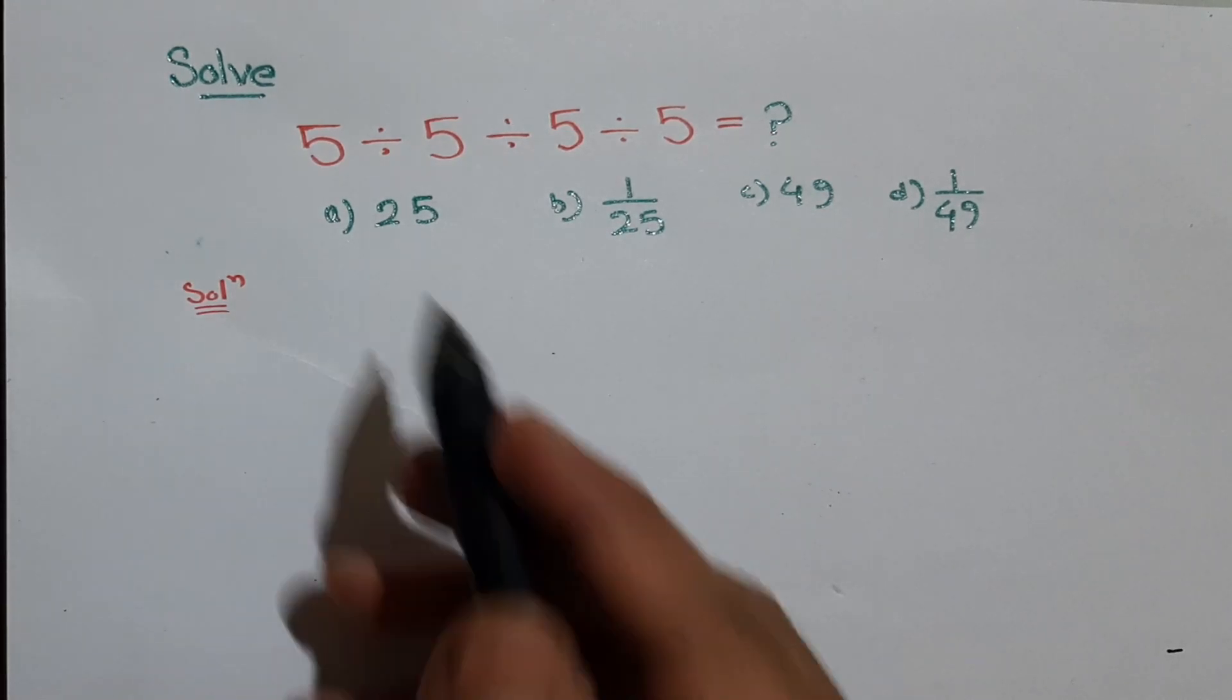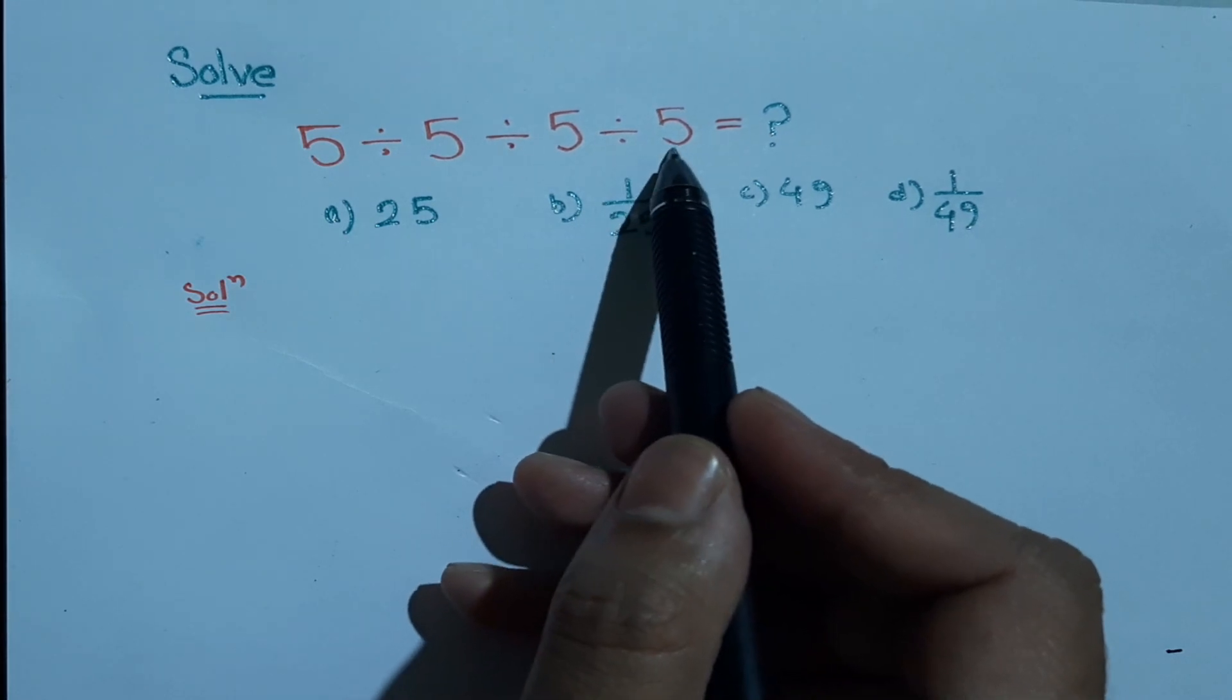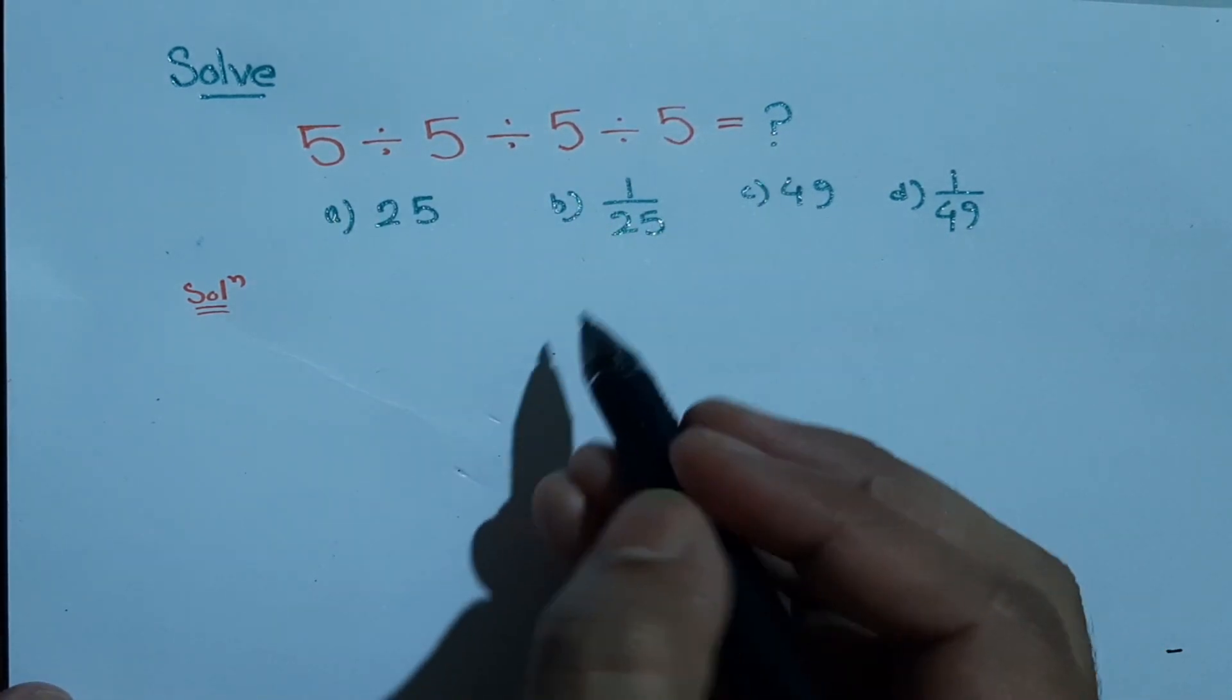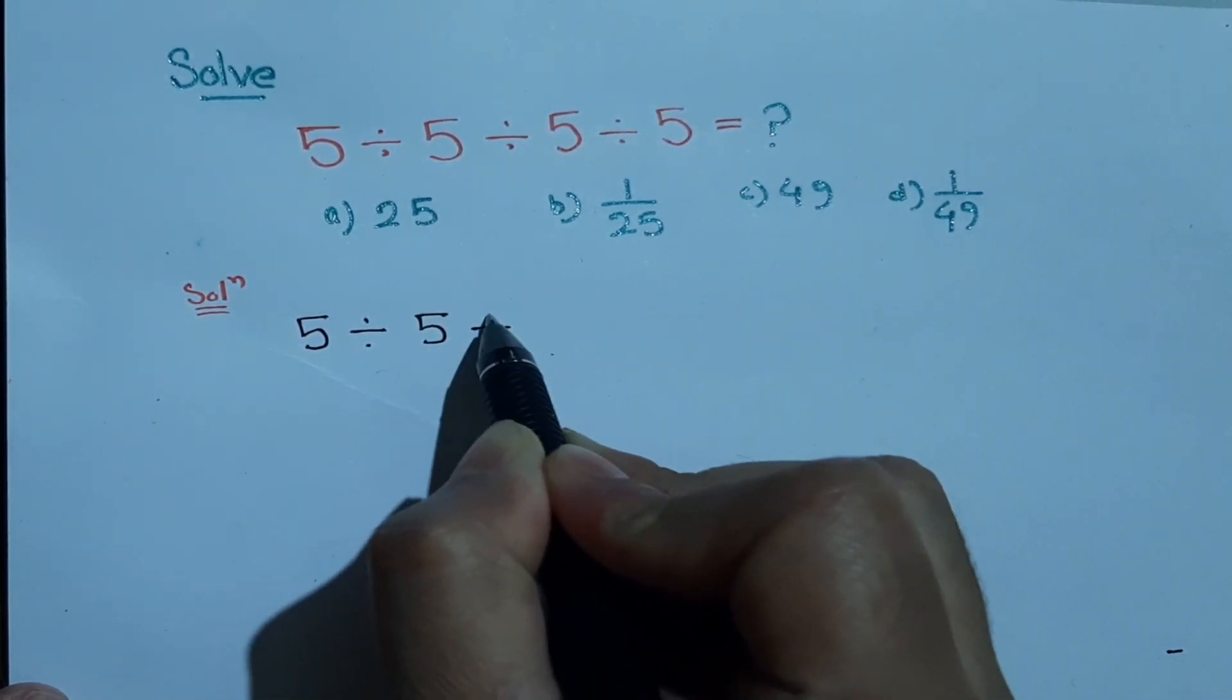Hello guys, welcome to my channel. Let's solve this problem: given 5 divided by 5 divided by 5 divided by 5. To find out the value of this, let's first write the given equation: 5 divided by 5 divided by 5 divided by 5.